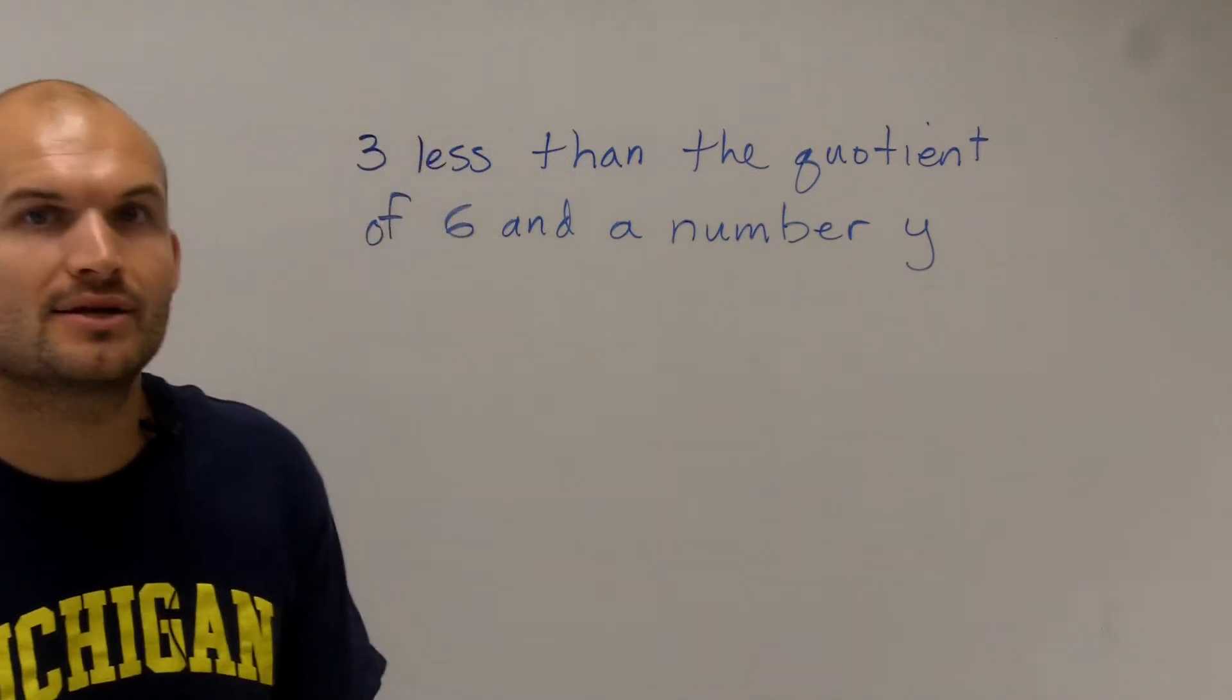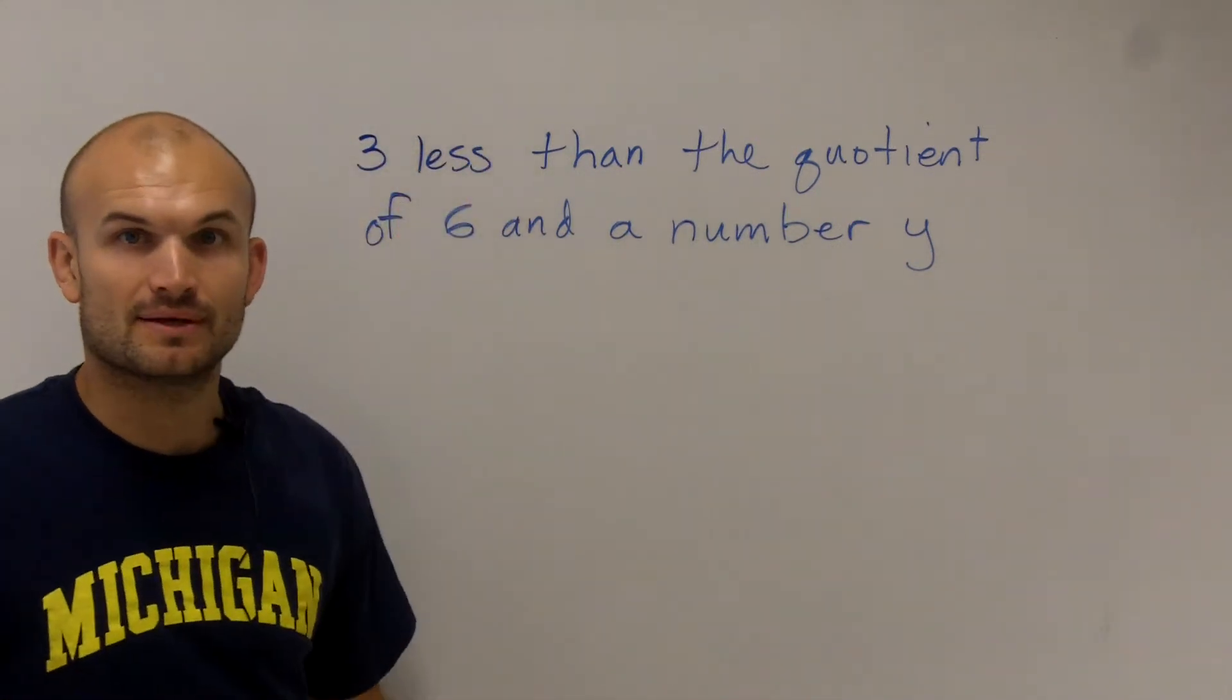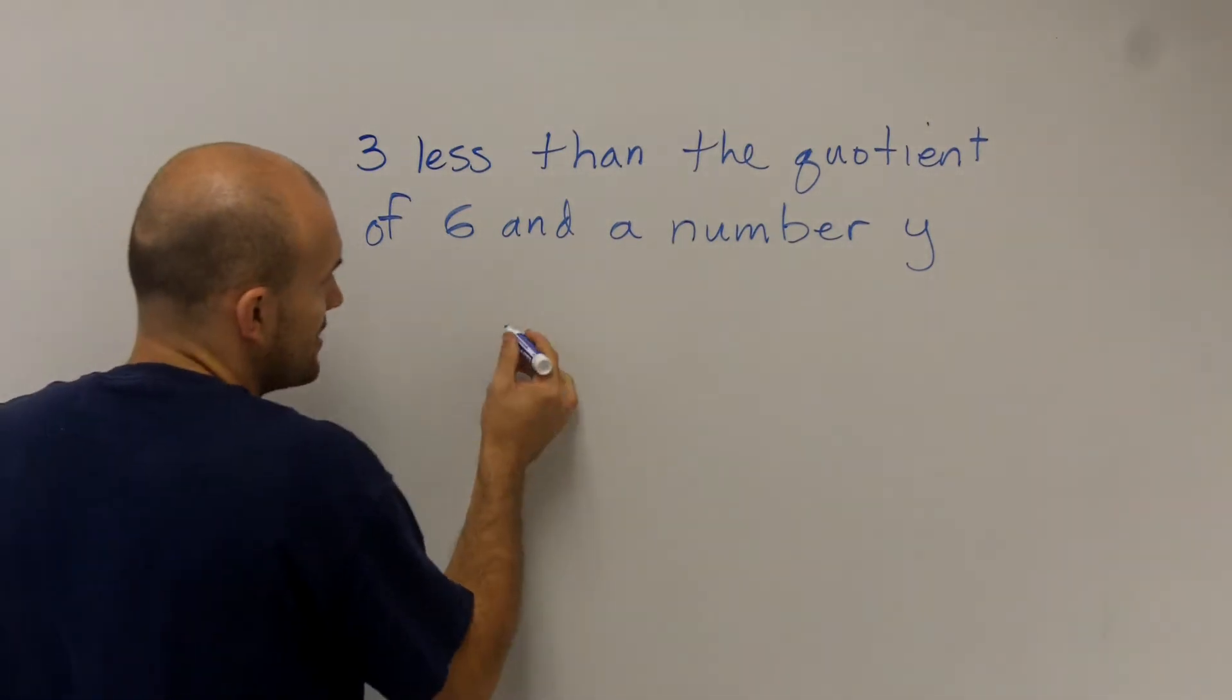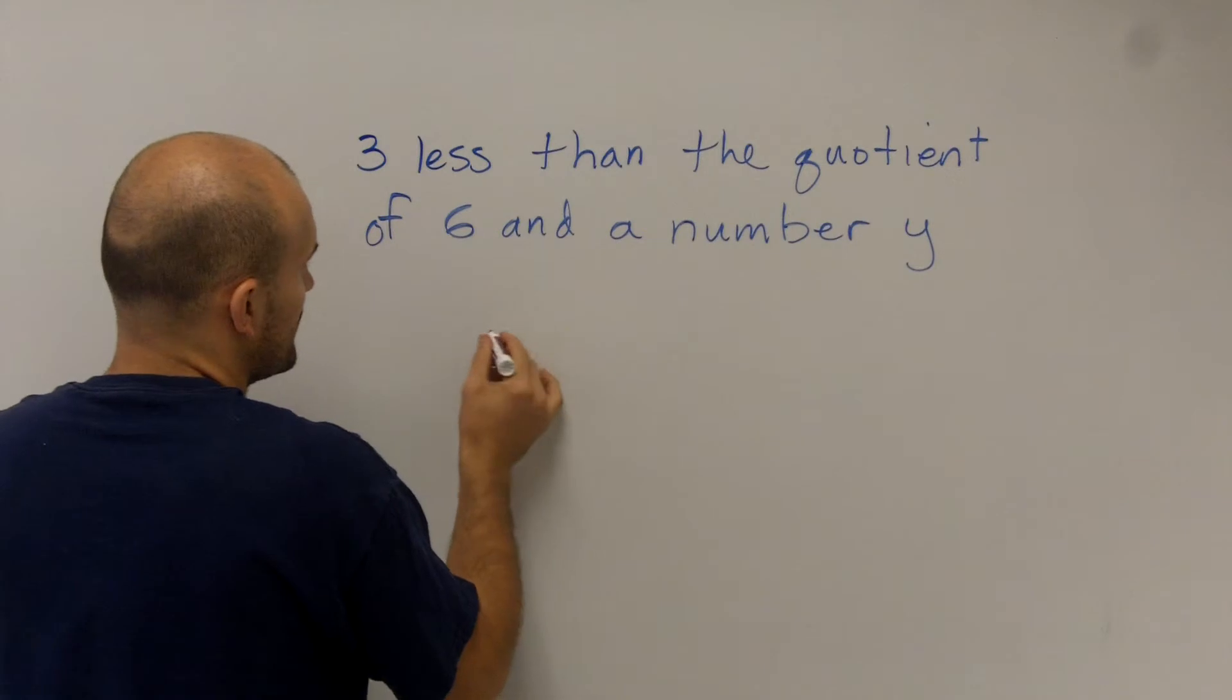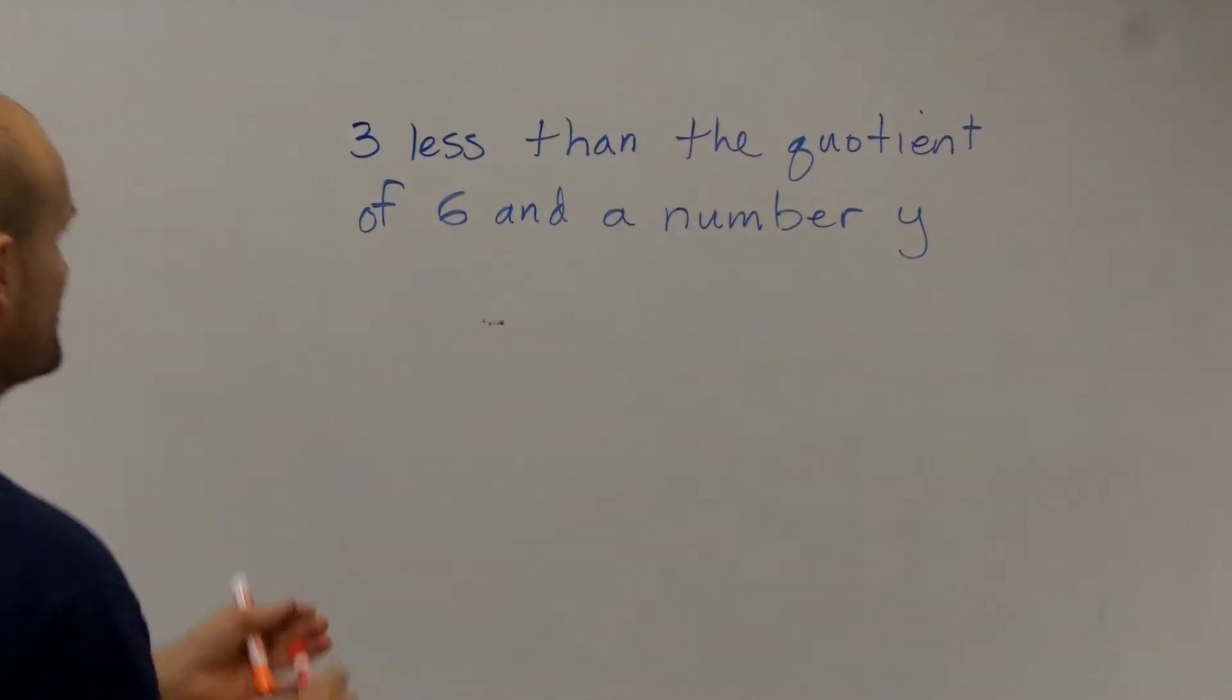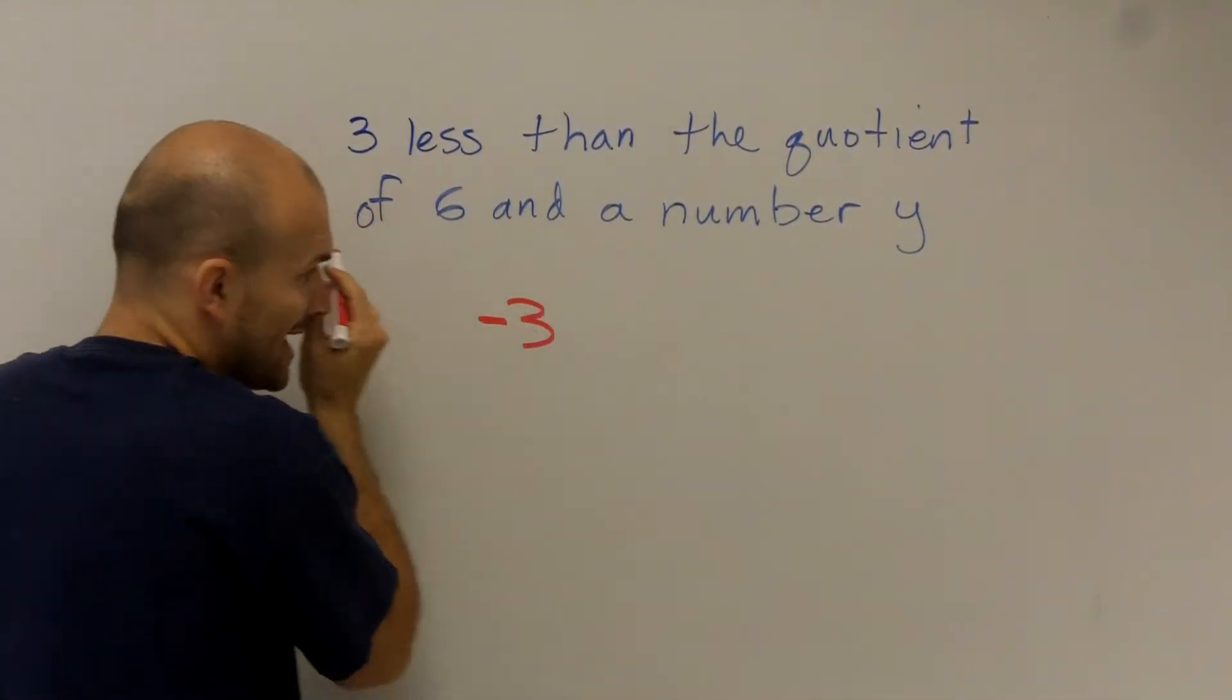So automatically, when we're reading through these types of problems, it says three less than something. So whenever I just hear three less, I know that I'm going to have to subtract three. So automatically, before even writing anything else, I'm just going to write. I want to use a different color. Let's try red. Minus three, right?